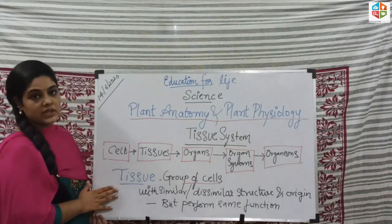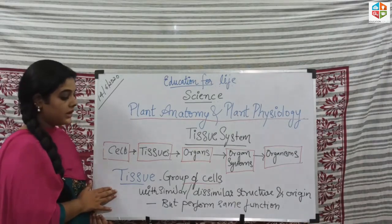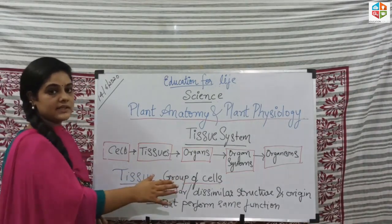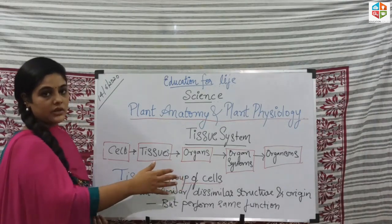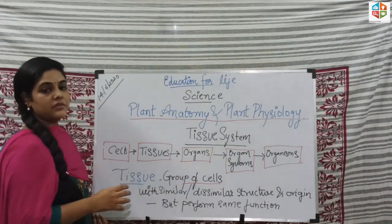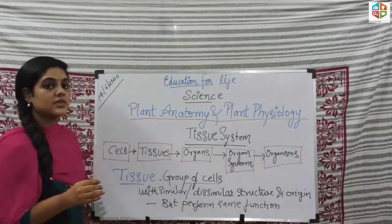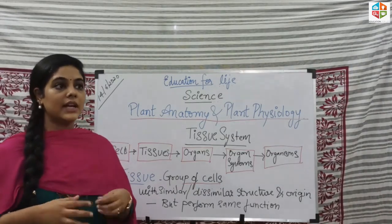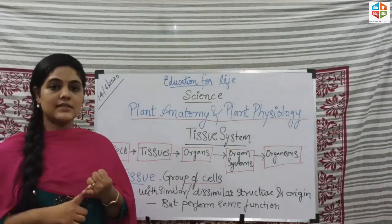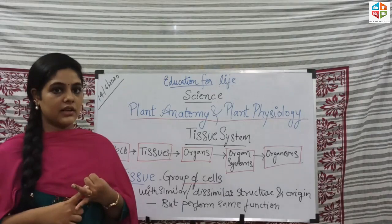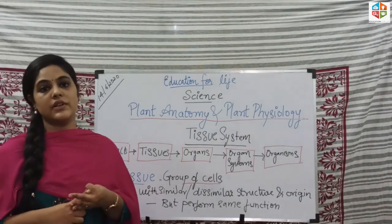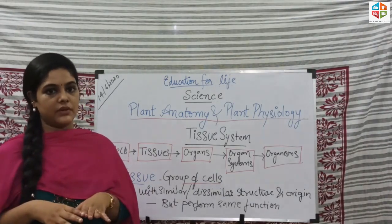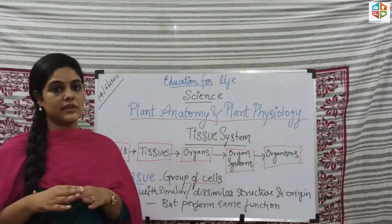Now I am going to talk about the definition of tissue. Tissue is a group of cells with similar or dissimilar structure and origin, but they will perform the same function. The cells in a tissue might differ — size is different, shape is different — but the cells will perform one function. That is tissue.